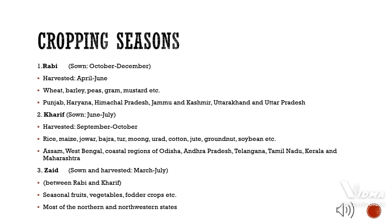Kharif crop: Sown in June to July, harvested September to October. Crops include rice, maize, jowar, bajra, tur, moong, urad, cotton, jute, groundnut, soya bean, etc. Major states: Assam, West Bengal, coastal regions, Andhra Pradesh, Telangana, Tamil Nadu, Kerala, and Maharashtra.